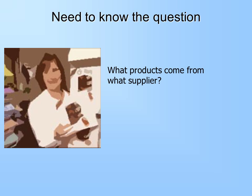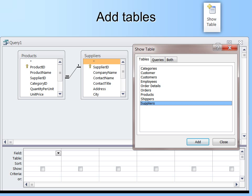Then you need to know the question. So I have all this data — what's my question? Well, let's say I want to know what products came from what supplier. Based on that, I know I need two tables: my Products table and my Suppliers table. So now I can add those tables. To add them, I simply click and then click Add, or double-click on it.